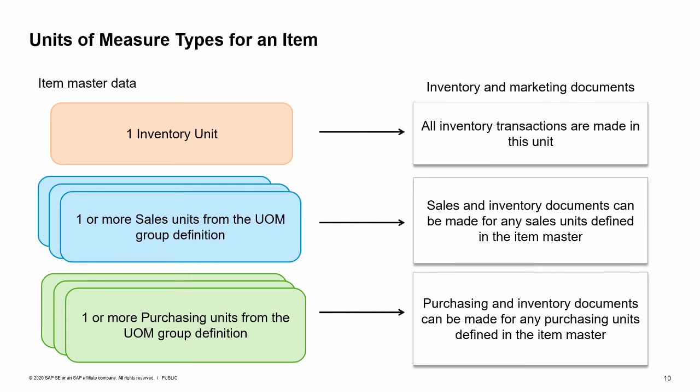In the item master data we define three different unit of measure types. The inventory unit of measure is a single unit of measure used for posting all inventory transactions. The inventory unit of measure cannot be changed once transactions were made for this item. Note that the inventory unit of measure field in the item master data does not appear if the manual group is assigned. The sales unit of measure: one item can have many sales units of measure related to it, and each can be used in a sales or inventory document. The purchasing unit of measure: one item can have many purchasing units of measure related to it, and each can be used in a purchasing or inventory document.